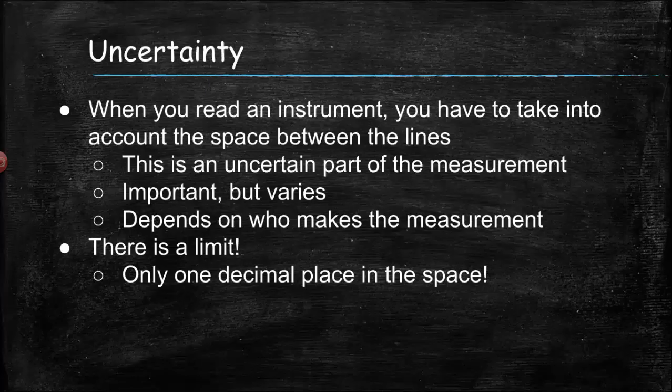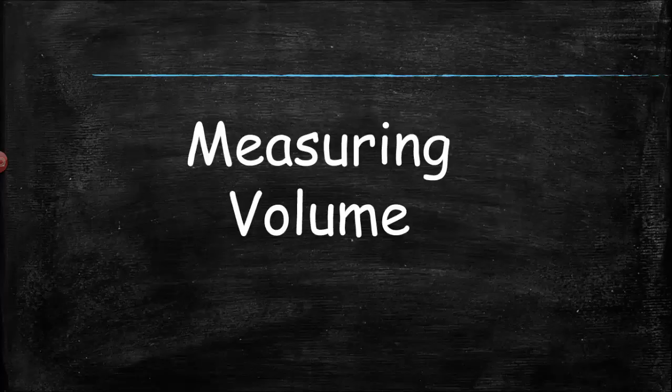You have to put that estimated digit in there, even though it's uncertain. But there's a limit — you can't make up decimal places if you don't have at least some lines to go on. The rule for uncertainty is: only one decimal place in the space. We're going to look at different types of measurements in order to really understand this.